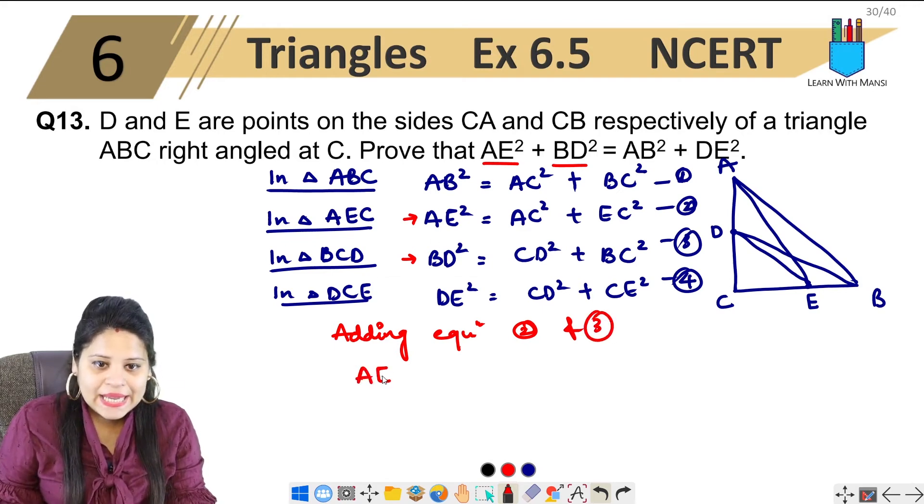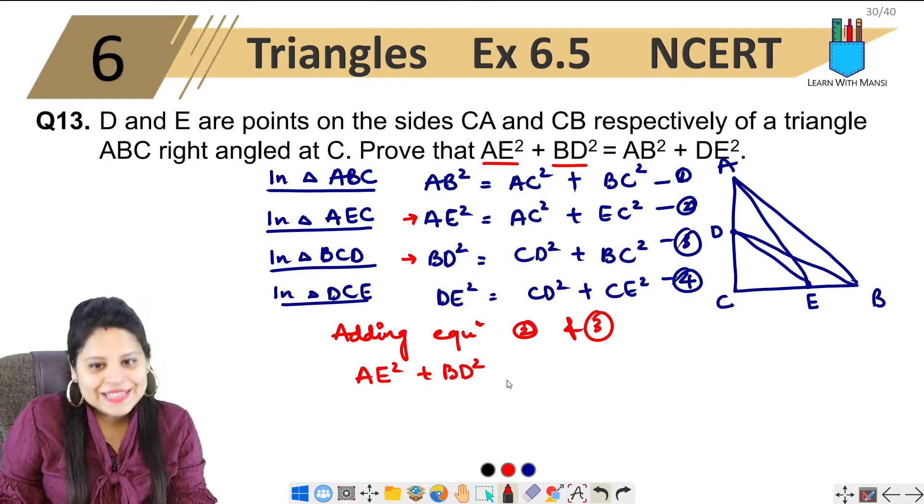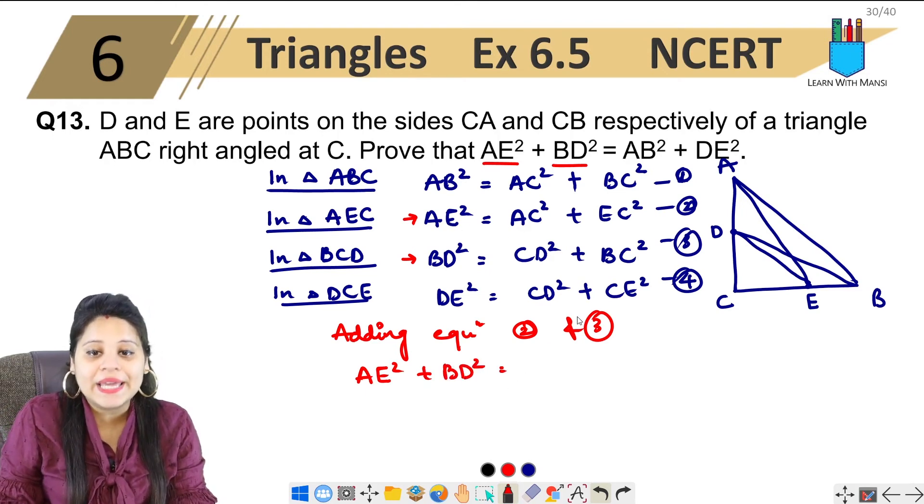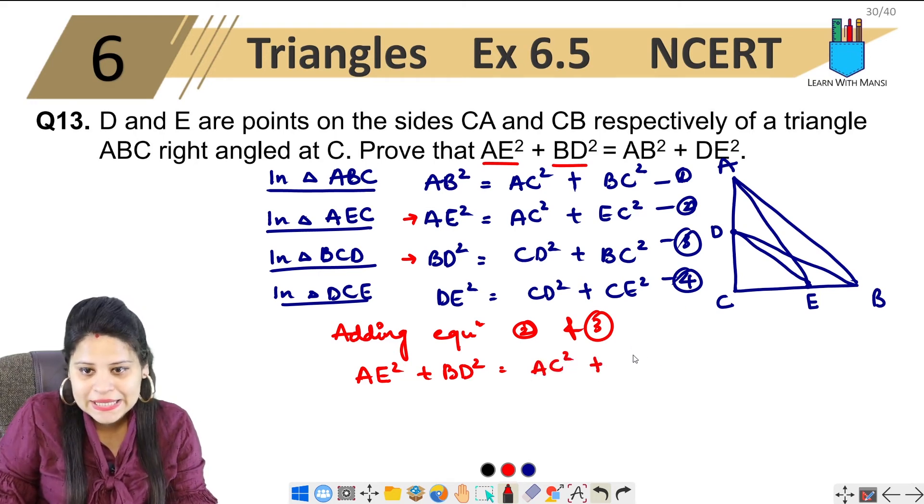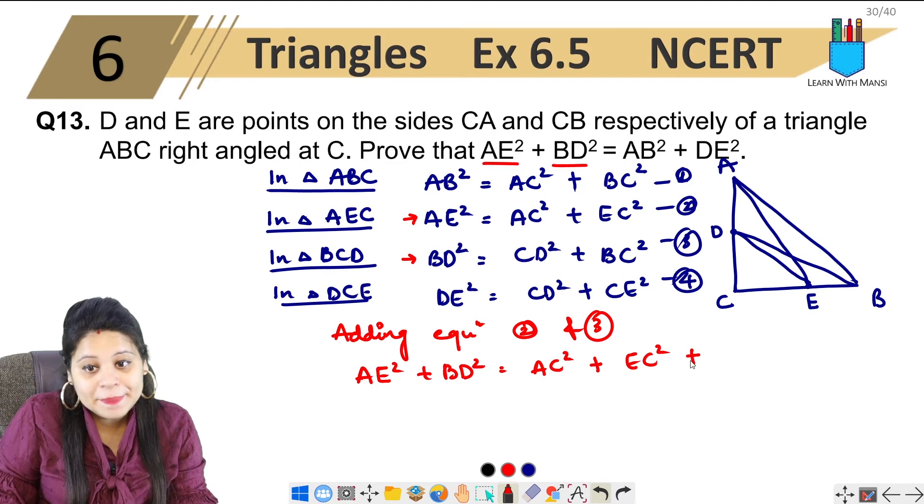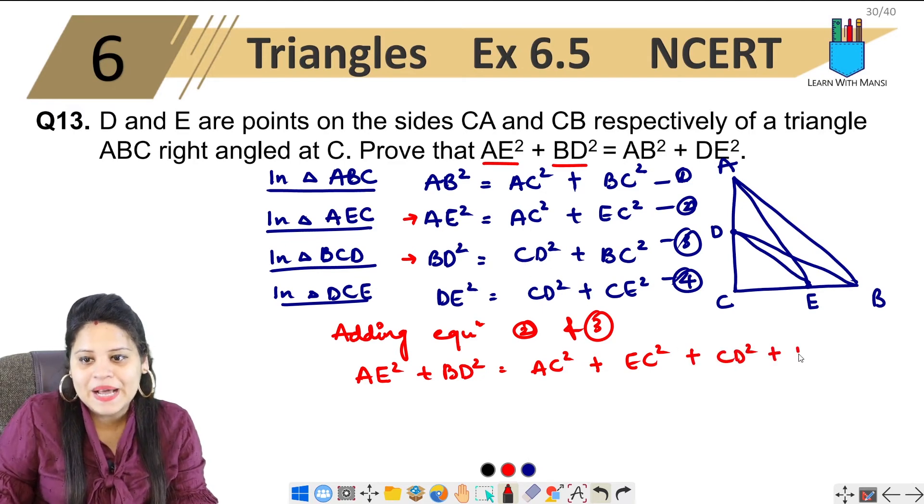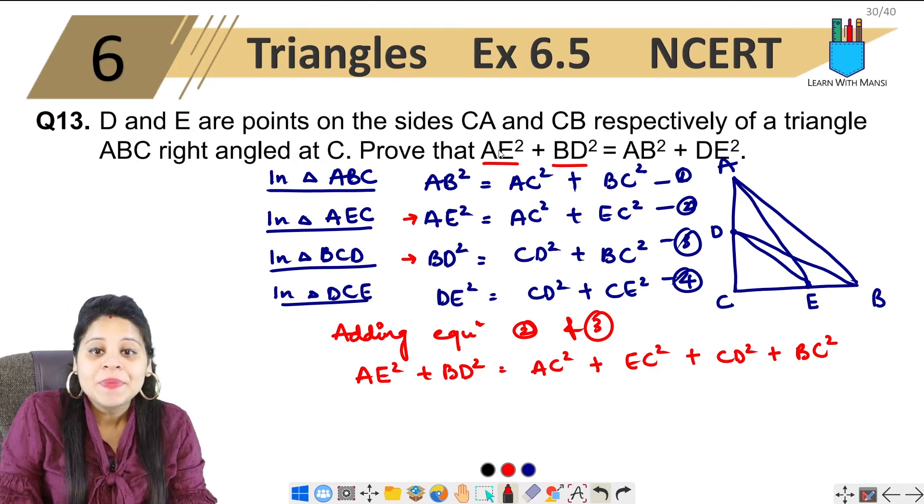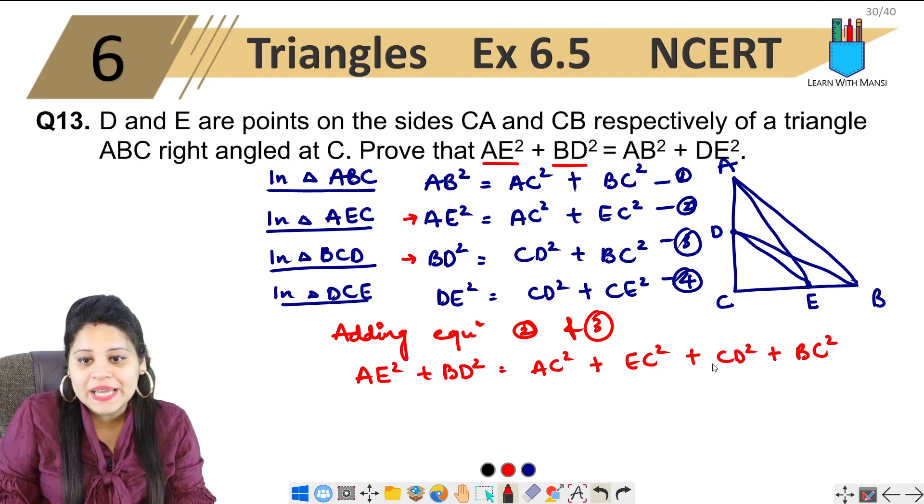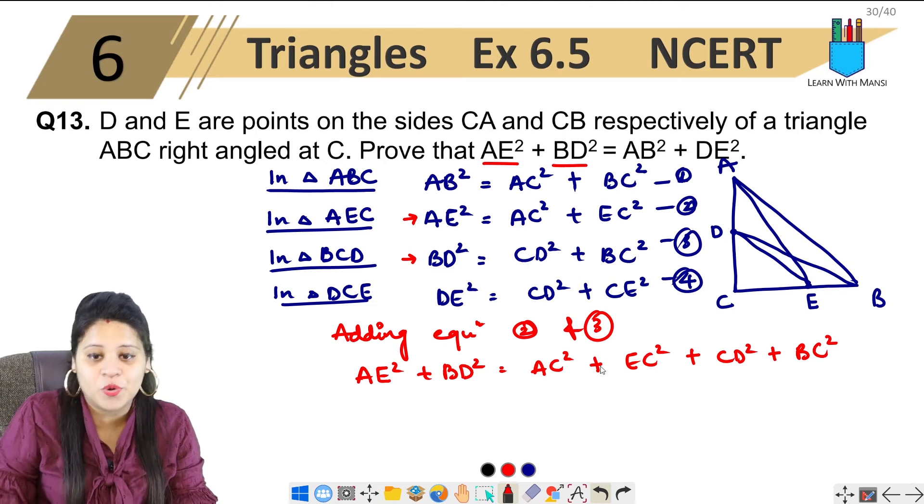Let's add. What will I get? AE square plus BD square. Clear? And which is equal? AE is my AC square plus EC square plus CD square plus BC square. Clear? No problem here. Now I got left hand side, I got right hand side here.